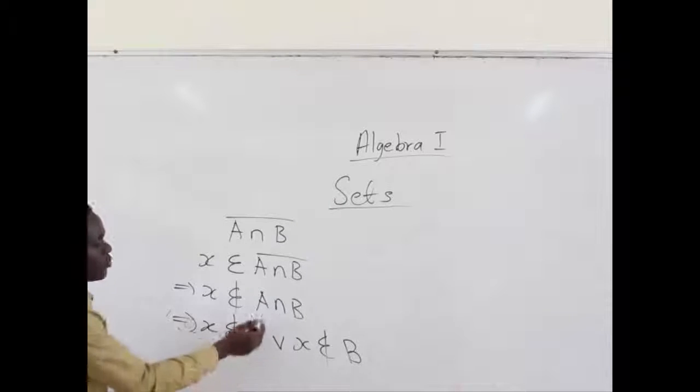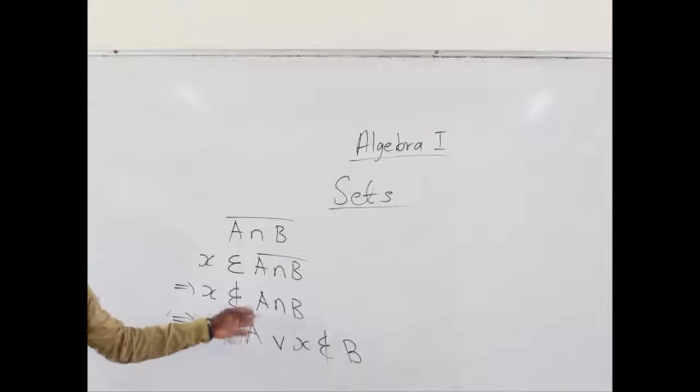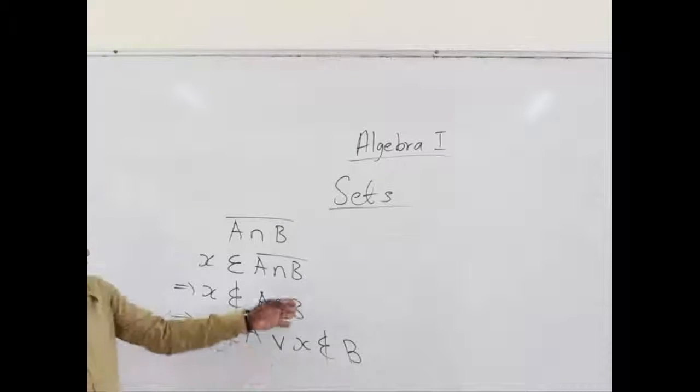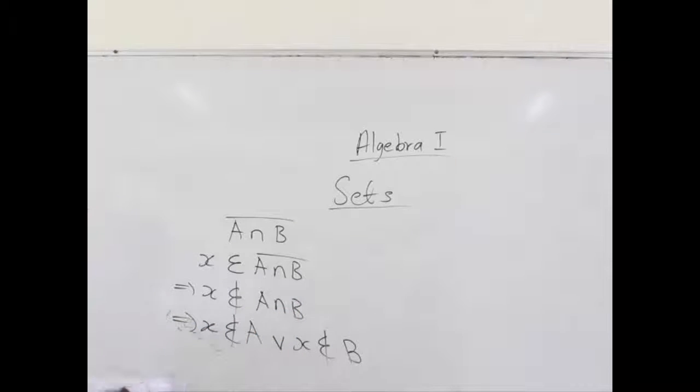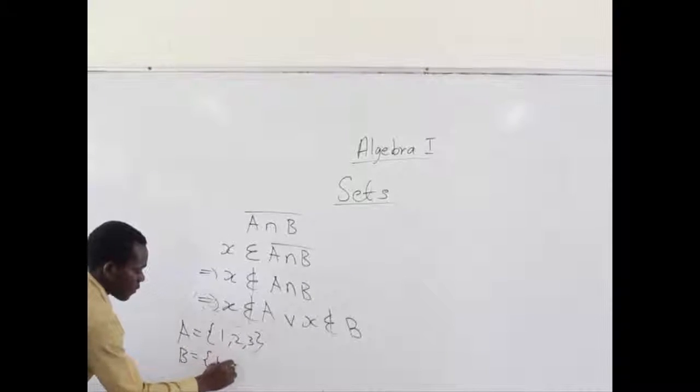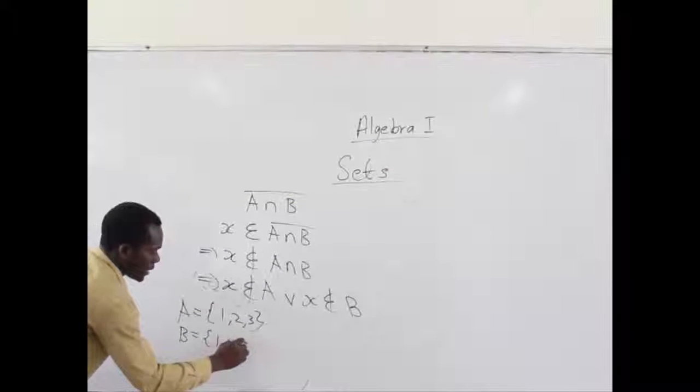If an element does not belong to A intersection B, it may be because it may be found in only A at a time but not B, or it may also mean that it can be found in B at a time but not in A. For example, let's say set A equals 1, 2, and 3, and let's say set B equals 1, 4, and 6.